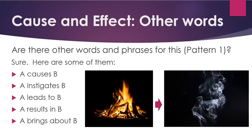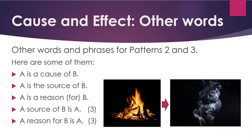Are there other words and phrases for this? For pattern one — sure, here are some: A causes B, A instigates B, A leads to B, A results in B, A brings about B. For patterns two and three, here are some examples: A is a cause of B, A is the source of B, A is a reason for B — notice we changed the preposition there. For pattern three: a source of B is A, a reason for B is A — notice we also changed the preposition to 'for.'